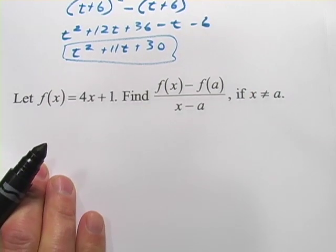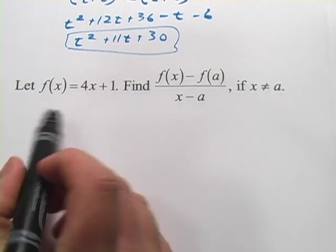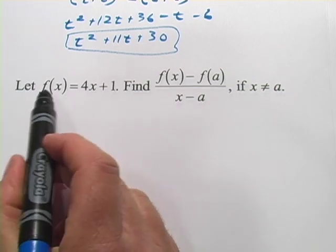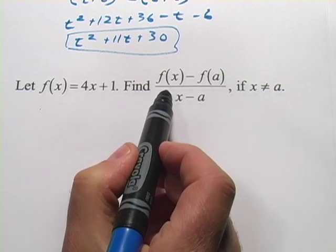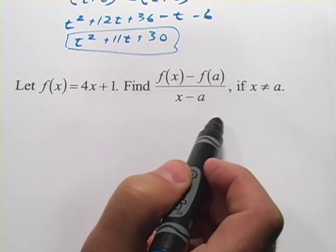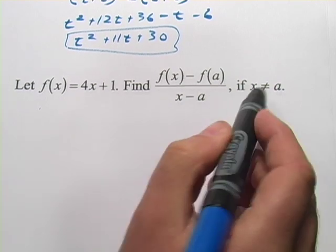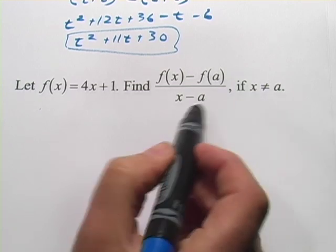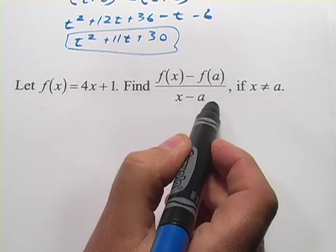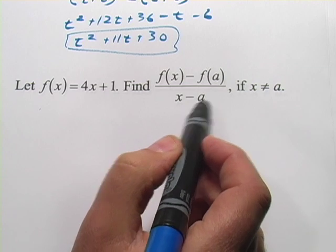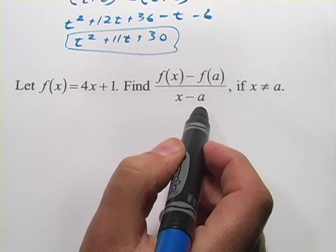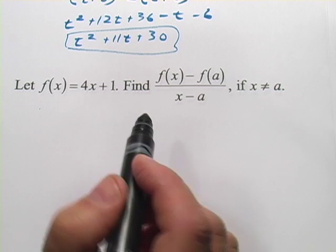All right, let's try one more. This one's kind of a fun one. So, we've got the function f of x is 4x plus 1, and we want to find f of x minus f of a over x minus a. Of course, where x does not equal a, you have to say that because if x equaled a down here, you'd have an undefined function because you'd have 0 in the denominator.